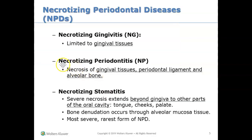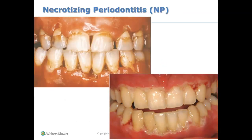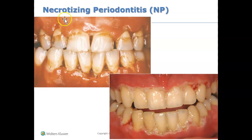Necrotizing periodontitis involves tissue death of the gums, the PDLs, and the bone, and we can see that in this image. Look at how the papilla has been punched out, cratered, or scooped out — the papilla is dying. There's definite tissue death happening, lots of bleeding, and again, the number one complaint is pain.